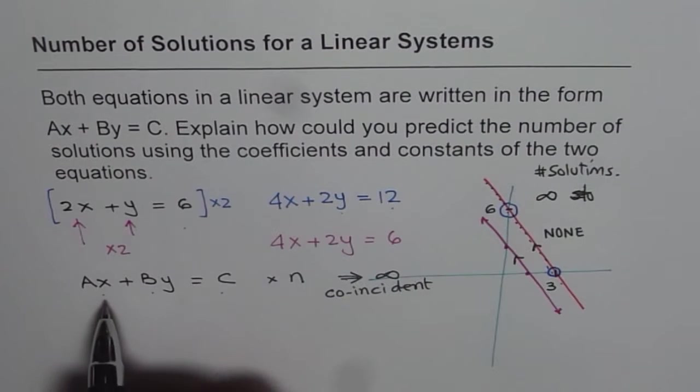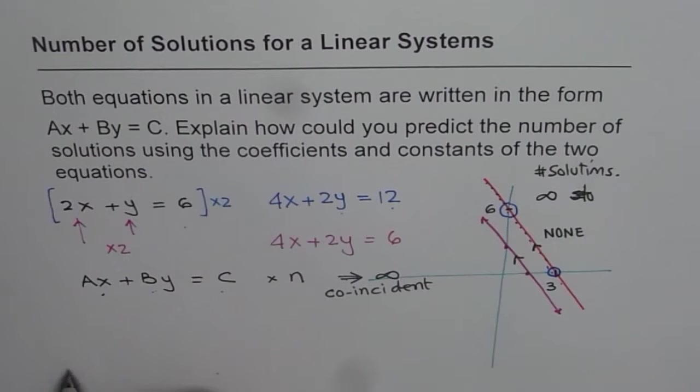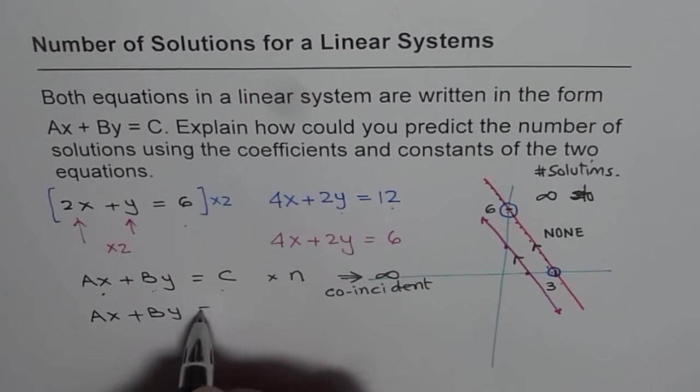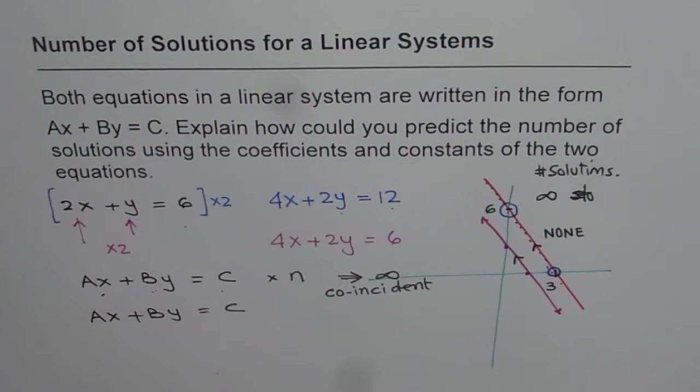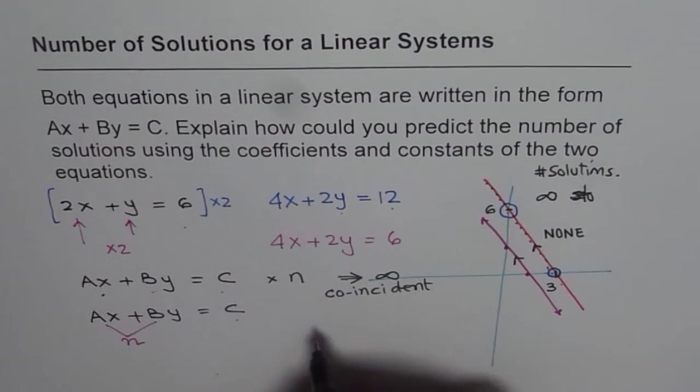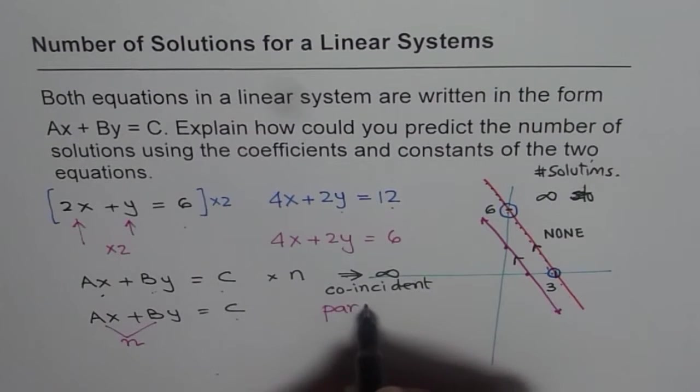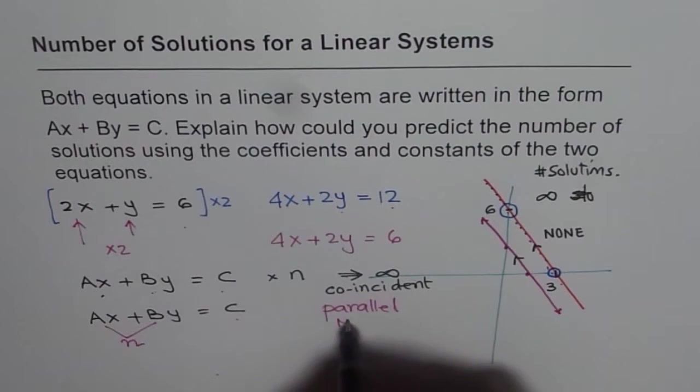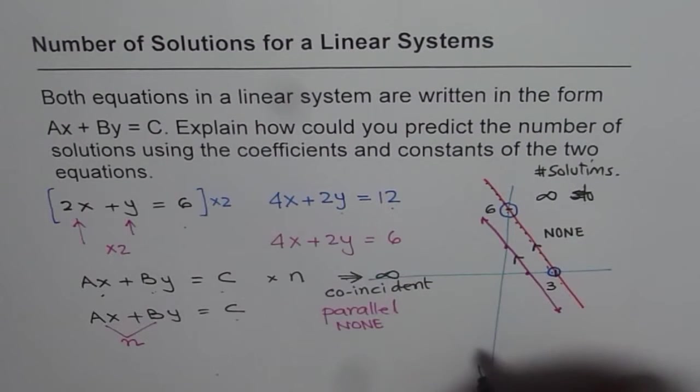But if I multiply only the coefficients, that is to say, if I have equation AX plus BY equals to C, and if I multiply both A and B by same number, let us say that number is N, but not C. In that case, I get parallel lines, and parallel lines means none, point of intersection, right? No solution, right?